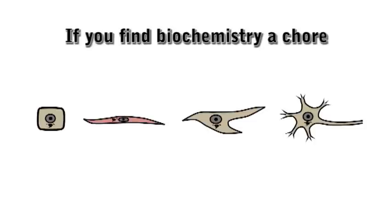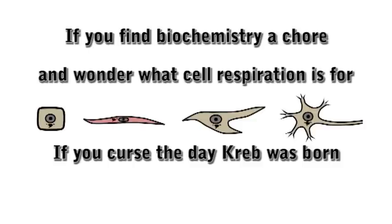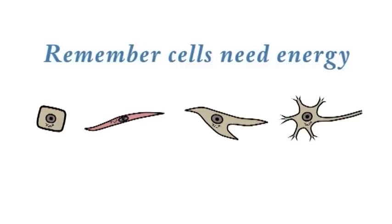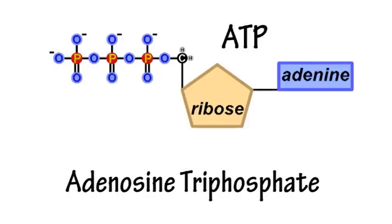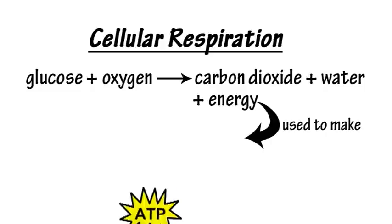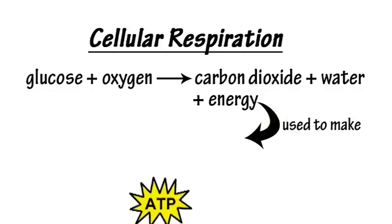If you find biochemistry a chore and wonder what cell respiration is for, if you curse the day CREP was born and glycolysis simply makes you yawn — remember: cells need energy, and so they generate a molecule called ATP, which is adenosine triphosphate. You start off with glucose and some oxygen and get CO2 and water at the other end, and along the way you release some energy that is captured in the molecules of ATP.